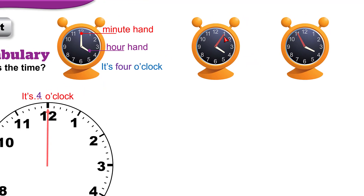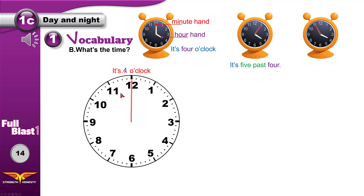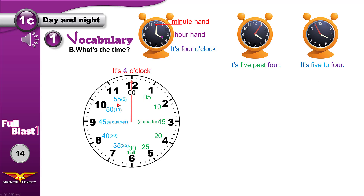It's 5 past 4. In one hour we have 60 minutes. If the minute hand is at 1, that means 5 minutes have passed after 4. Now, after 5 minutes it will be 4 o'clock, so we say it's 5 to 4. That means after 5 minutes — 1, 2, 3, 4, 5 — it will be 4. So we say it's 5 to 4.